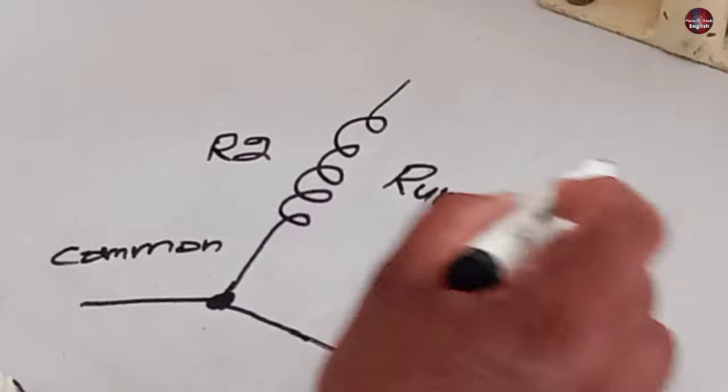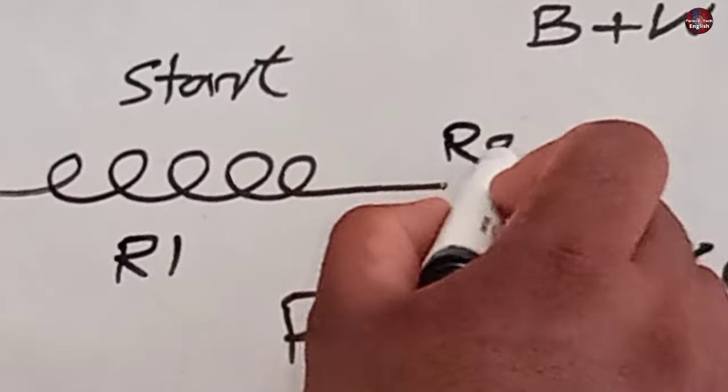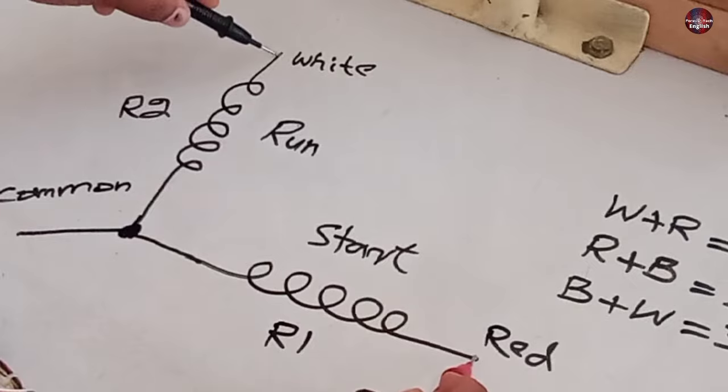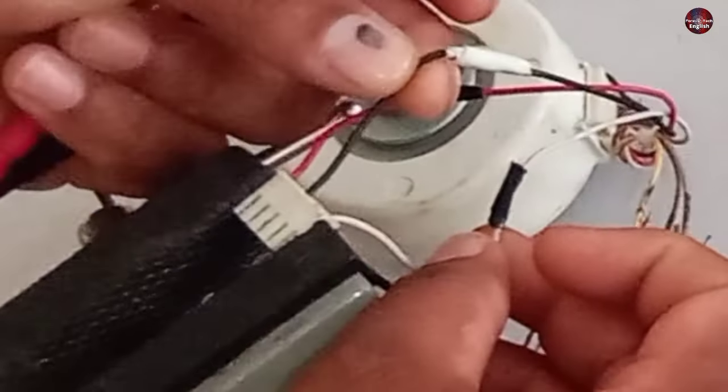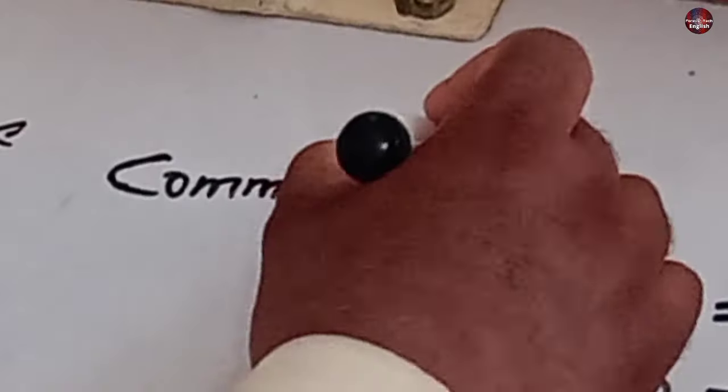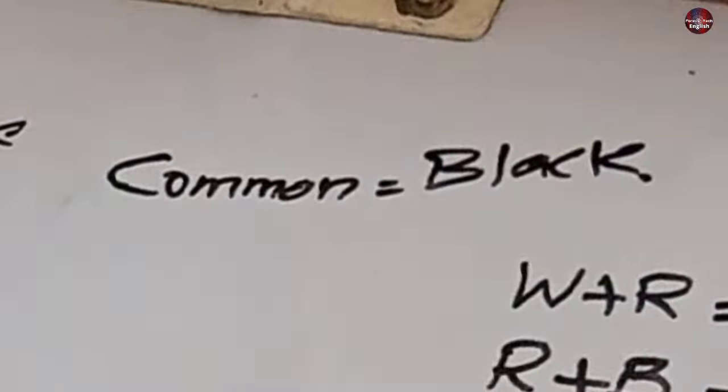Now I will name run or R2 as the white wire. The R1 is the red wire. We are getting this value when I connect the multimeter probes with these wires. It means the one wire which is left is the black wire, which is the common wire. I am writing it as well that the black wire is the common wire.